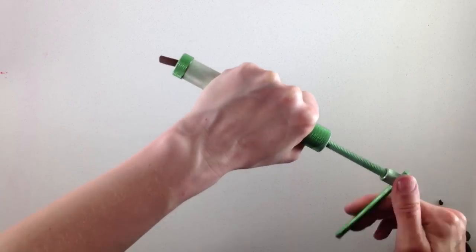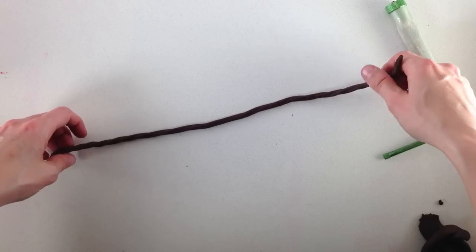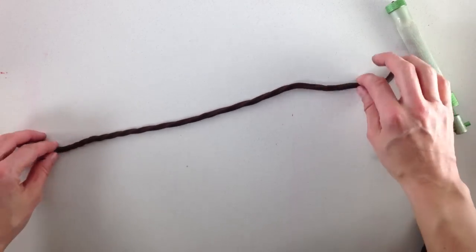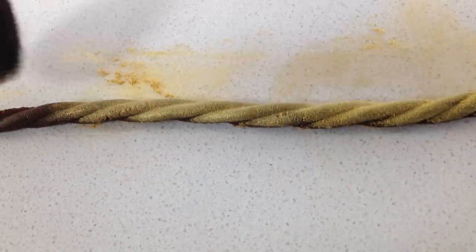Then for this pattern, I want you to twist the cord in opposite directions on each end so that it looks like the cord. Then take some gold luster dust and brush it on using a paint brush.